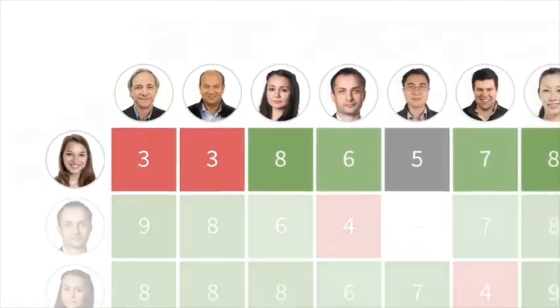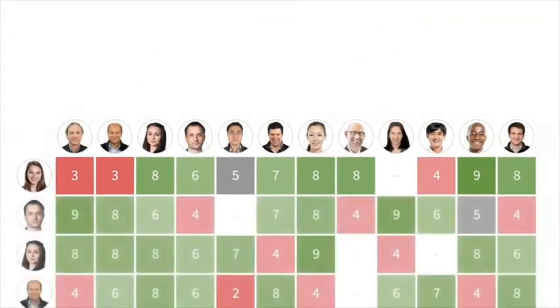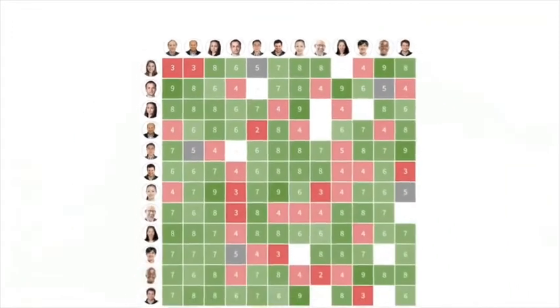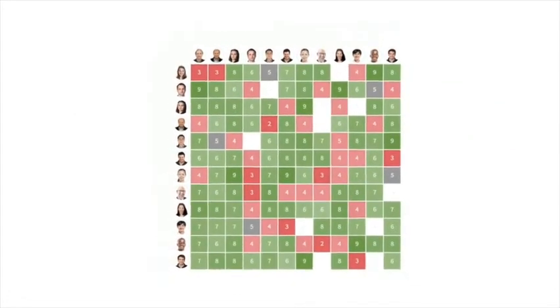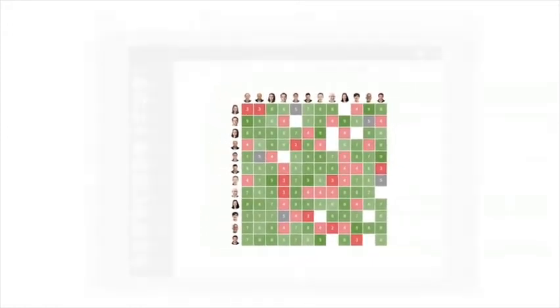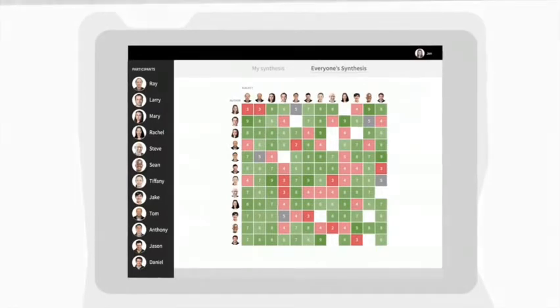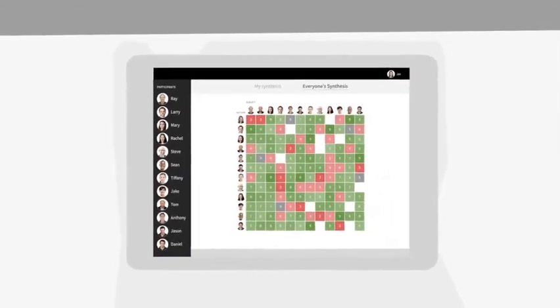This tool helps people both express their opinions and then separate themselves from their opinions to see things from a higher level. When Jen and others shift their attention from inputting their own opinions to looking down on the whole screen, their perspective changes. They see their own opinions as just one of many.